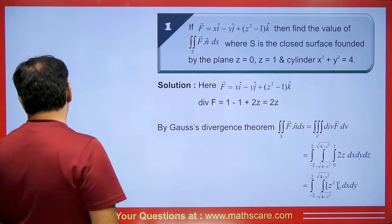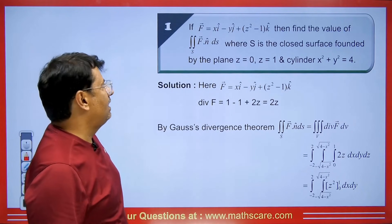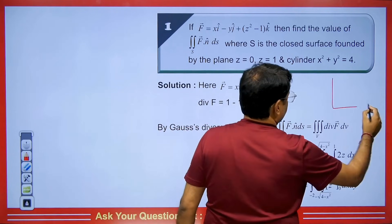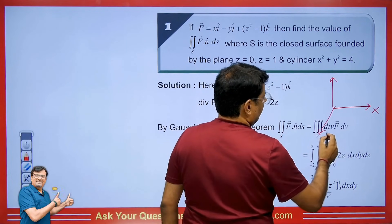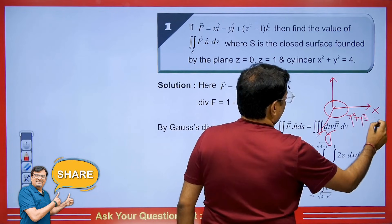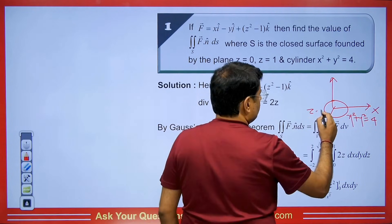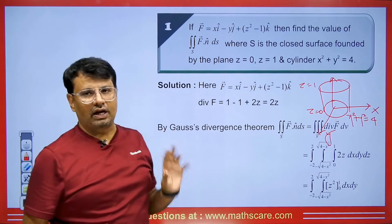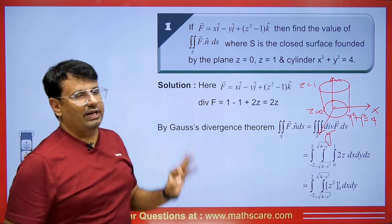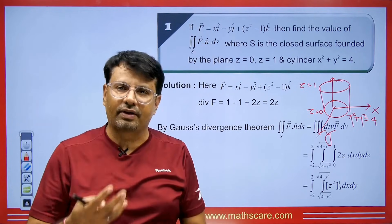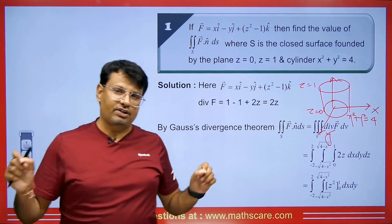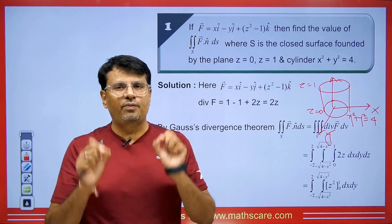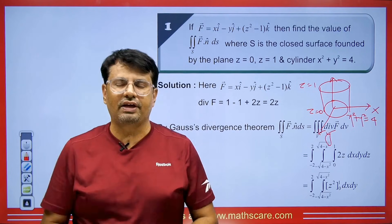Students, let's look at another question. F is given as xi − yj + (z² − 1)k. Find the value of the double integration of f·n ds, where S is a closed surface bounded by x² + y² = 4, z = 0, and z = 1 — that is, a cylinder. We will do this in two ways. Using the Gauss Divergence Theorem, we convert the surface integral into a volume integral and solve it.